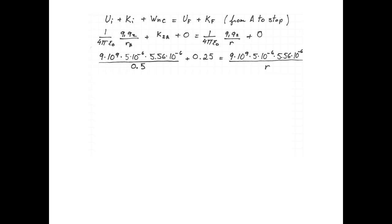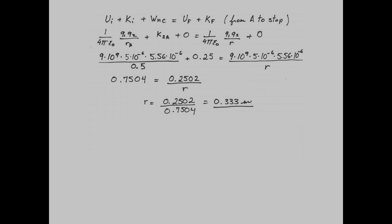Here, we know all the numbers except the distance R between q1 and q2 when q2 has stopped. So let's just plug everything in and solve for R. 0.7504 equals 0.2502/R, meaning that R is 0.333 meters or 33.3 centimeters.